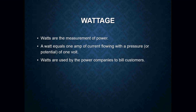Wattage is the measurement of power. A watt is equal to one amp of current flowing with a pressure or potential of one volt. Watts are used by the power companies to bill customers. We use wattage in lots of ways when measuring electric heat elements — how many watts that electrical element is actually using. Wattage is also used on bulbs; if you read a light bulb, you'll see it has a certain wattage that it's going to use in order to light.